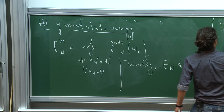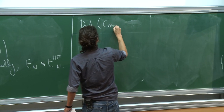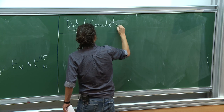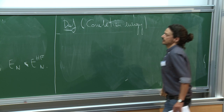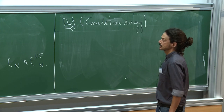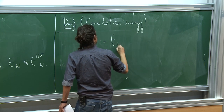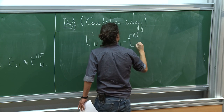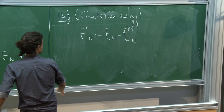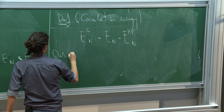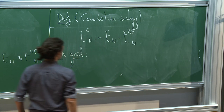Much harder is to understand the lower bound of the many-body energy in terms of Hartree-Fock. I would like to focus on the correlation energy, which, as the name suggests, is the energetic contribution due to the fact that fermionic states are not exactly Slater determinants. The correlation energy is defined as the many-body ground state energy minus the Hartree-Fock ground state energy.